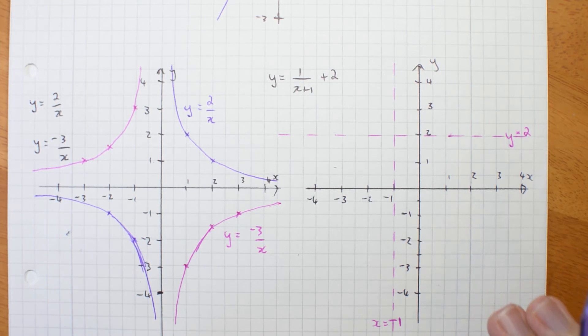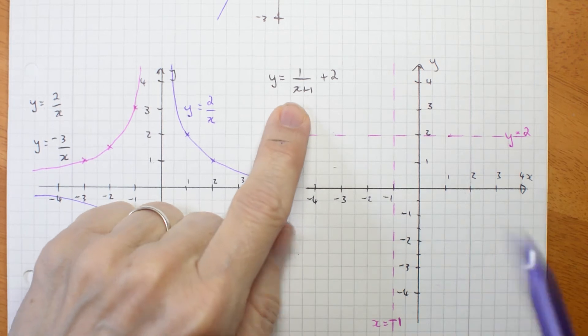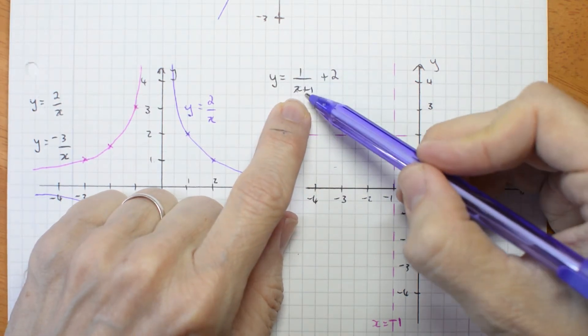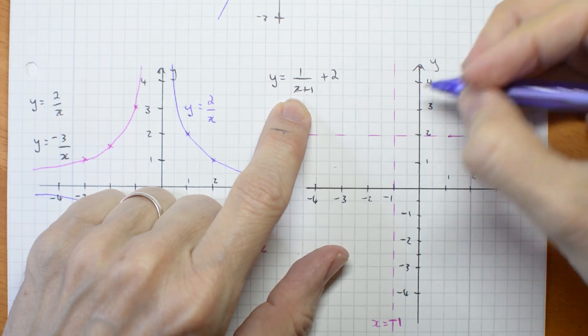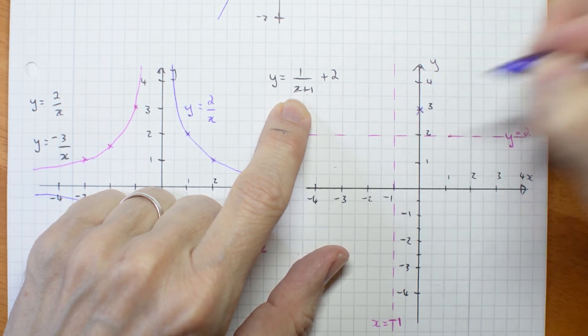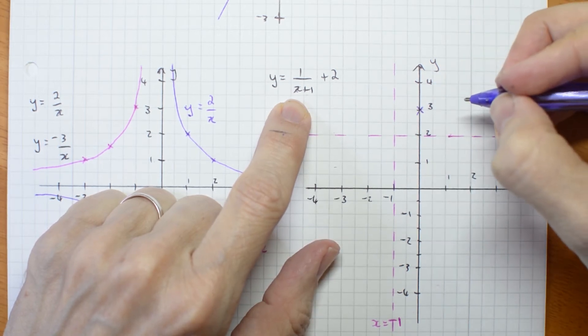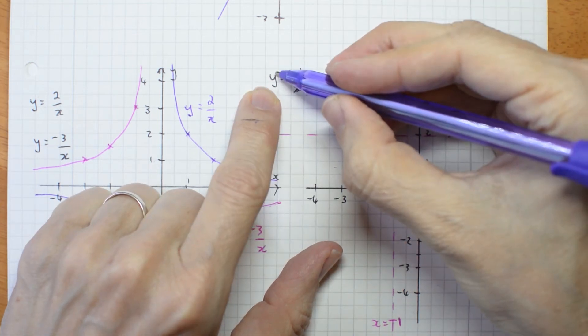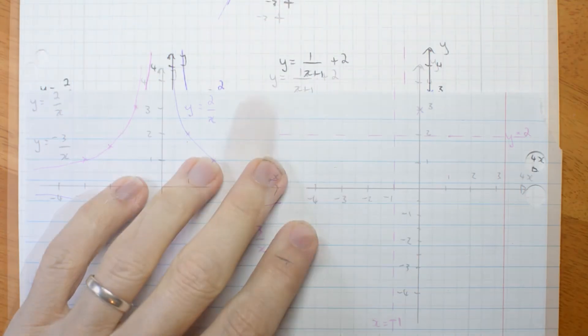I can probably work out intercepts. If x is 0, then y is 1 plus 2, which is 3. There's a useful point. And if y is 0, that might be a bit harder. Let's work it out.